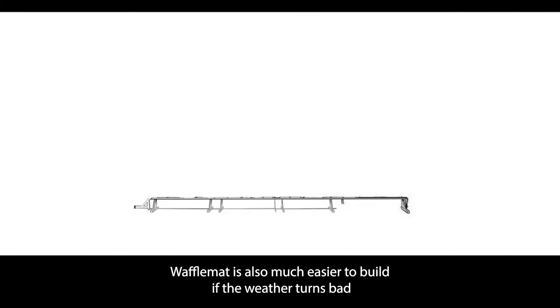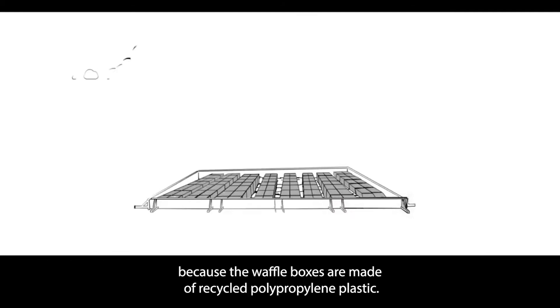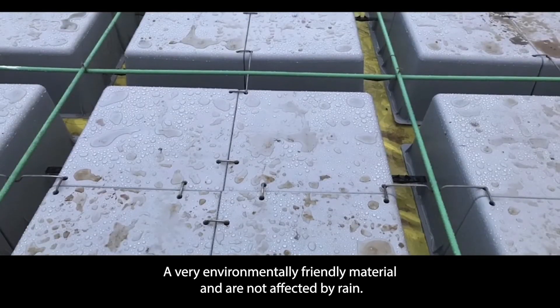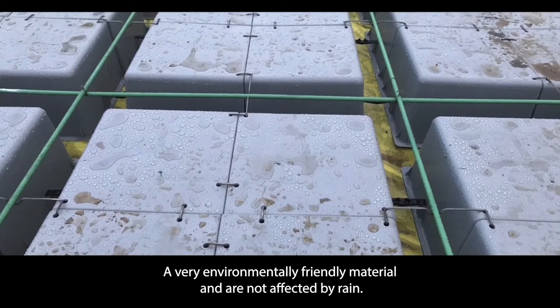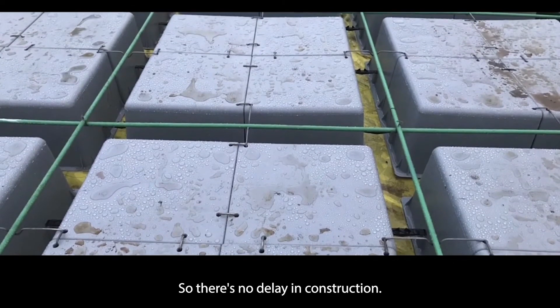Wafflemat is also much easier to build if the weather turns bad because the waffle boxes are made of recycled polypropylene plastic, a very environmentally friendly material, and are not affected by rain. So there's no delay in construction.